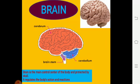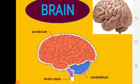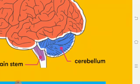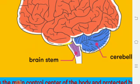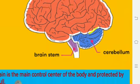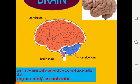Let's discuss some parts of the brain. As you can see, the larger part of our brain is known as the cerebrum. The next part, below the cerebrum, is known as the cerebellum, indicated through the blue color. And the stalk-like structure present below the cerebellum is known as the brain stem. So, we have three parts of our brain.